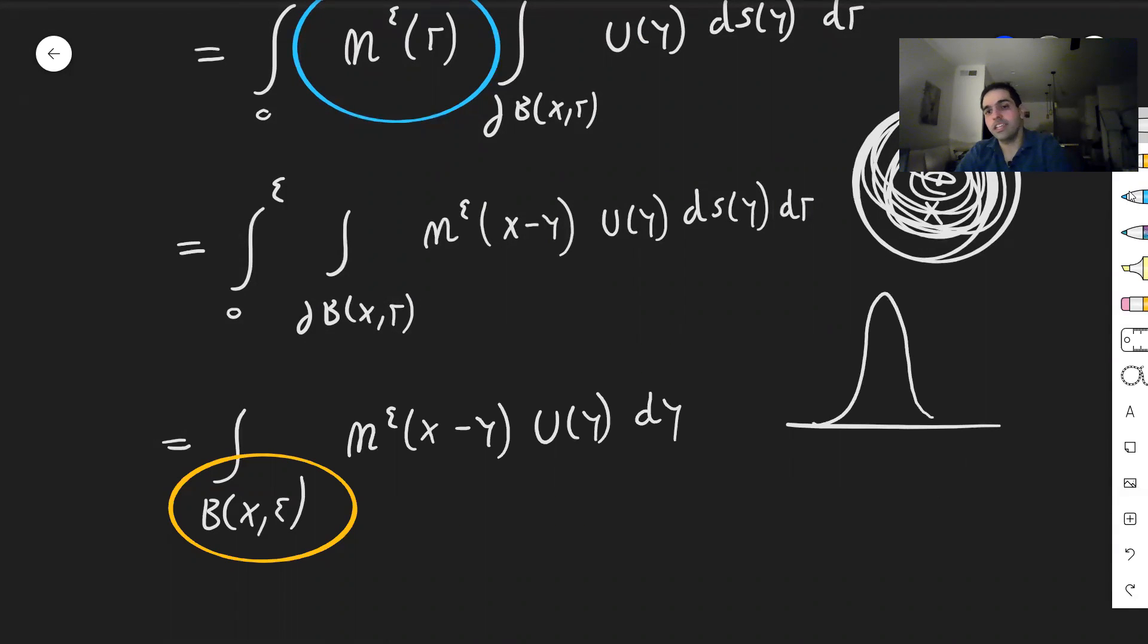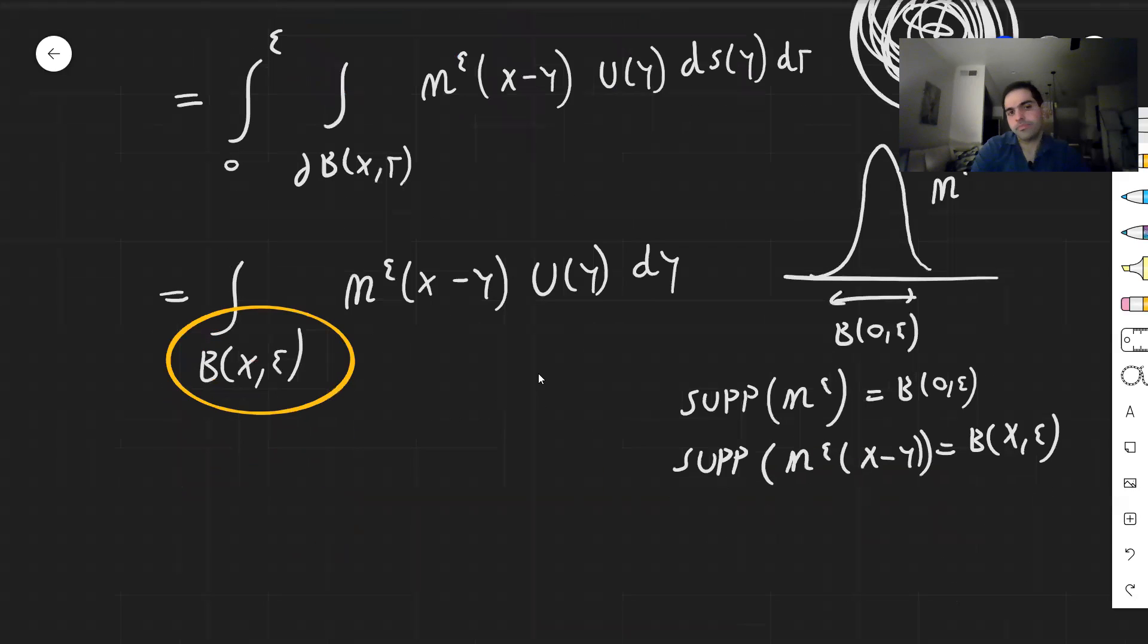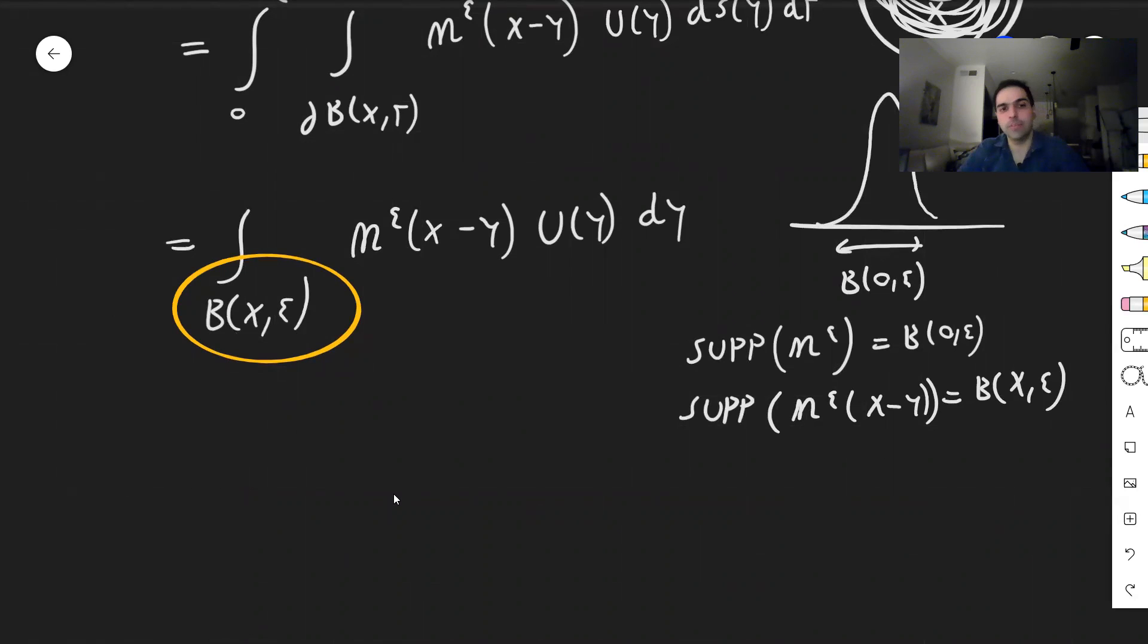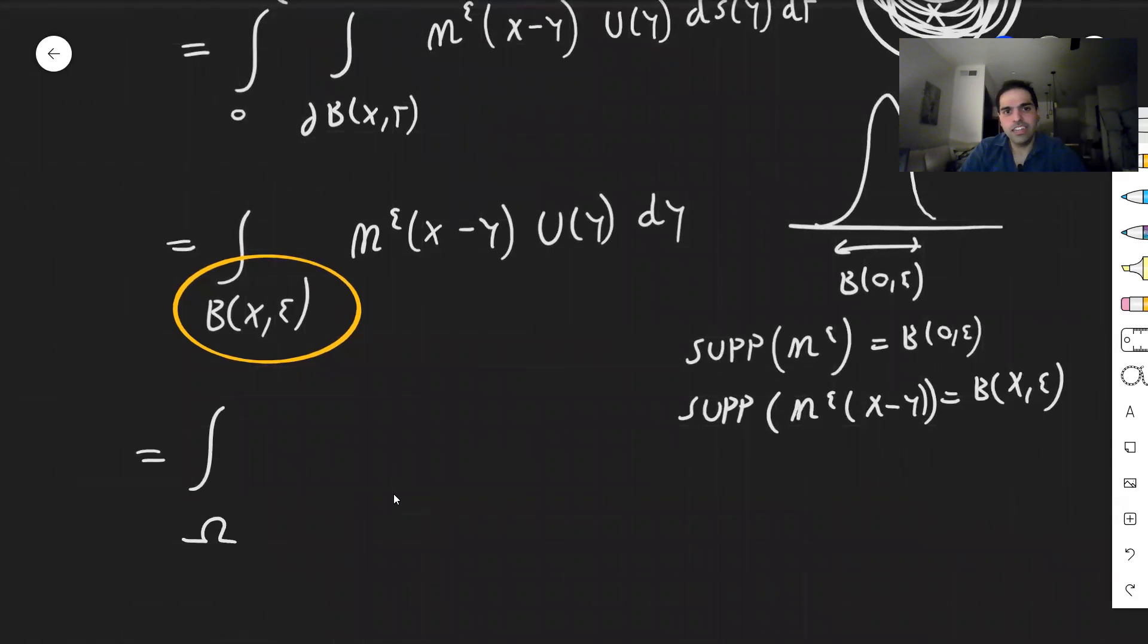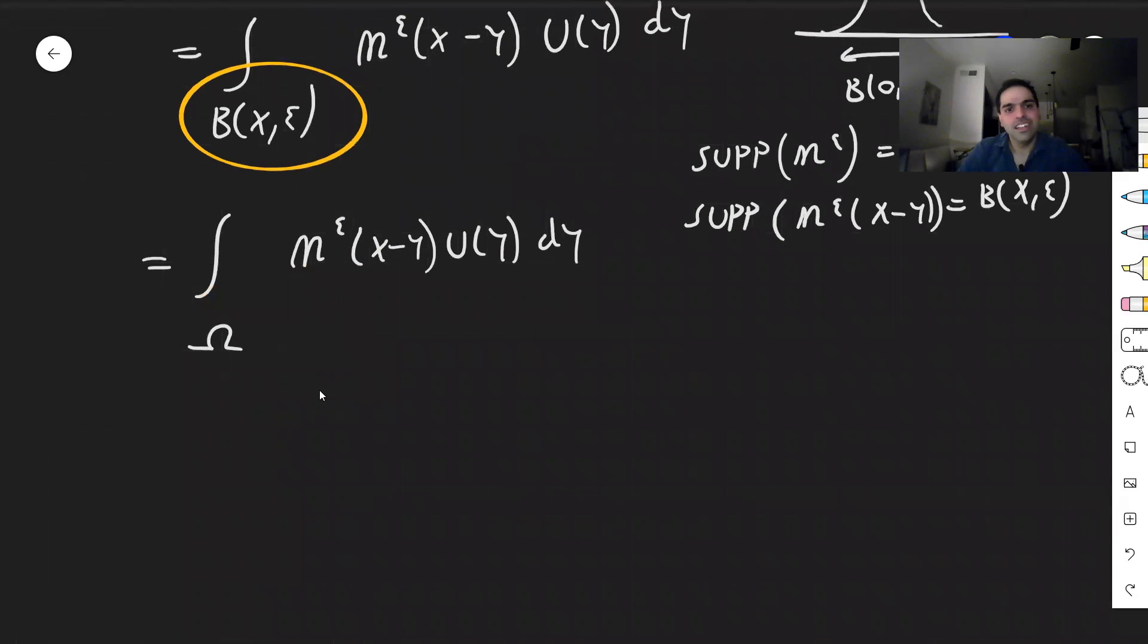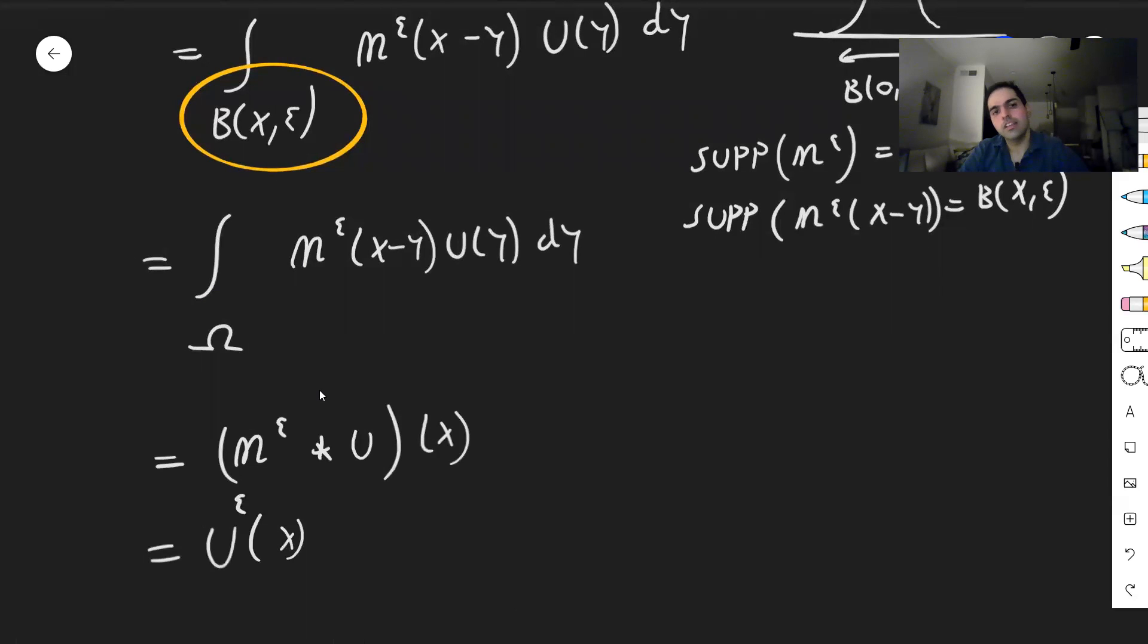Now this almost looks like the formula for convolution, except here the domain is not all of R^n, it's just that ball. However, remember this thing. So this eta epsilon, the support is in the ball centered at zero in radius epsilon. So the support of the shifted version eta epsilon of x minus y turns out to be precisely that ball centered at x in radius epsilon. In particular, this function is zero outside of that ball, which means in fact we can replace this by R^n, or in this case I think omega, whatever our set is, so eta epsilon of x minus y u of y dy. And this is precisely the definition of the mollification. So this is eta epsilon convolved with u at x, and this is u epsilon at x.